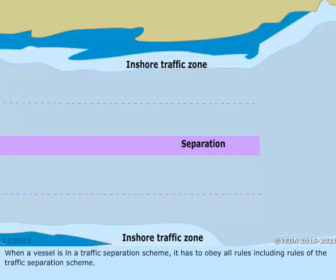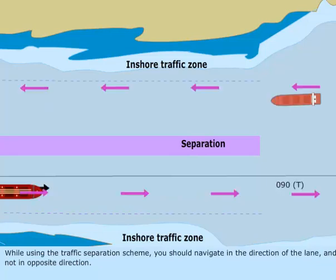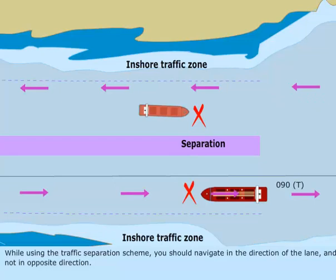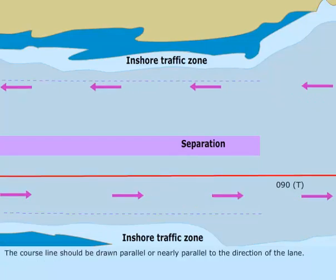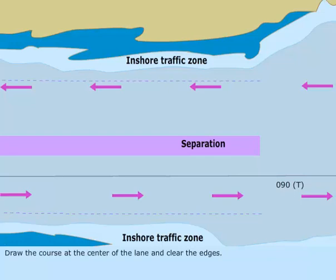When a vessel is in a traffic separation scheme, it has to obey all rules, including rules of the traffic separation scheme. While using the traffic separation scheme, you should navigate in the direction of the lane and not in the opposite direction. The course line should be drawn parallel or nearly parallel to the direction of the lane. Draw the course at the center of the lane and clear of the edges.